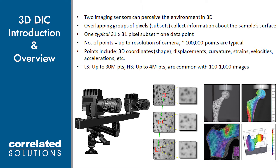Currently, low speed cameras can have up to roughly 30 million points in an image, and high speed cameras can have up to about 4 million points in an image. We aim to get about 200 images for most dynamic and quasi-static applications, and a few thousand images for vibration analysis. This is all highly dependent on the application, what the user wishes to measure, and desired measurement resolutions.